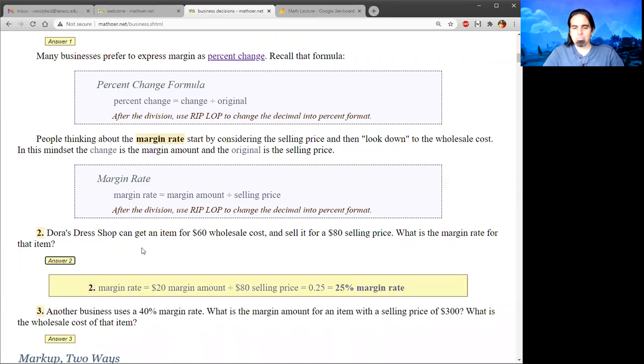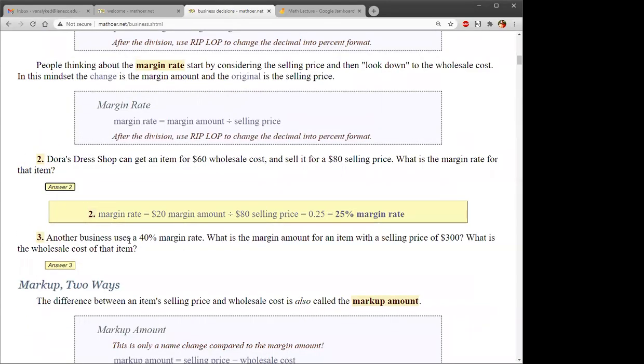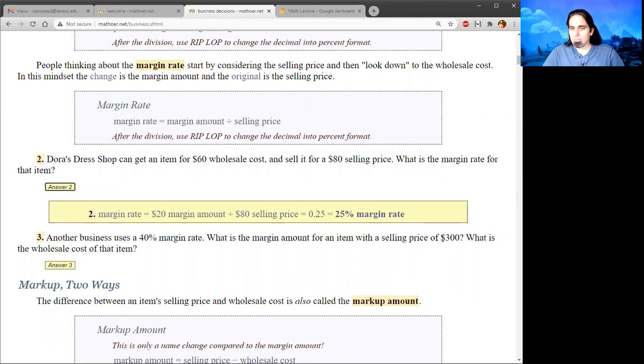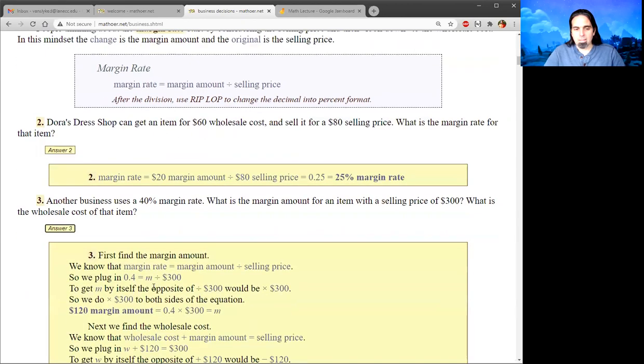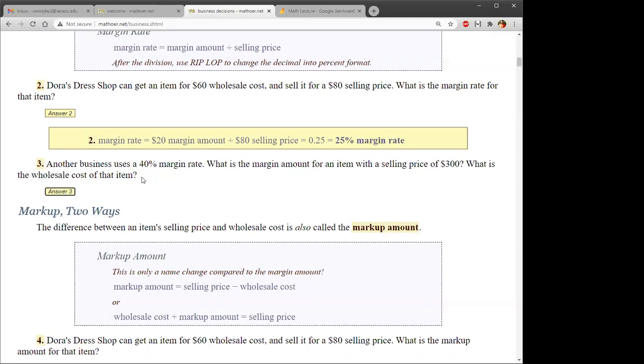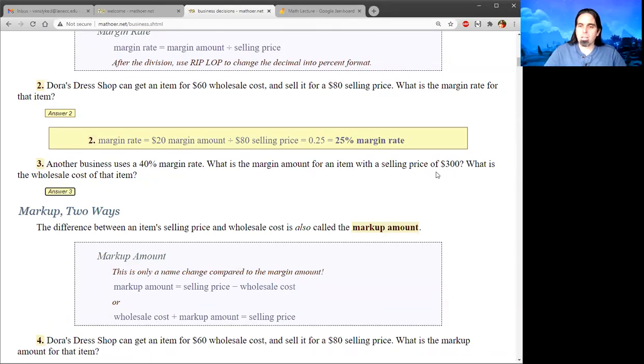Number two. Another business has a 40% margin rate. They sell something for $300. So what's the wholesale cost of that item? So I would take 40% and write it as 0.4, multiply it by $300. That would be $120. So the margin amount is $120. Then I have to subtract. So I take the $300, take away the $120, and I get $180 as the wholesale cost. So all of that hopefully makes sense.